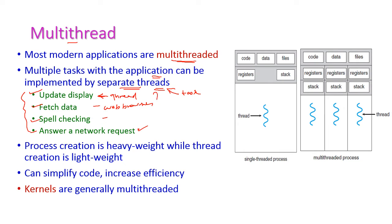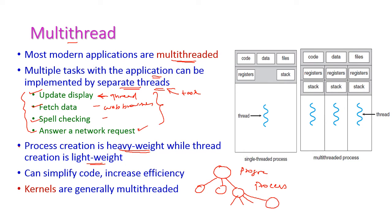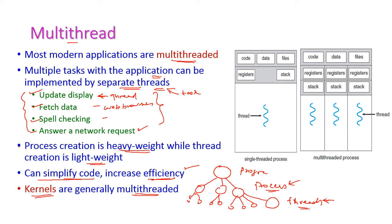Multiple threads execute simultaneously within a process. Process creation is heavyweight while thread creation is lightweight. A single program can create more processes, and within a single process we can have more threads. Thread creation is lightweight because a thread handles a small task while a process handles heavier tasks. Using threads simplifies code and increases efficiency. Kernels are generally multi-threaded and can support the multi-threading model.